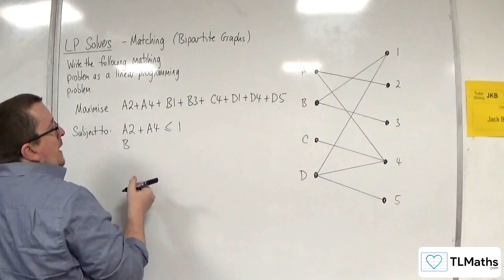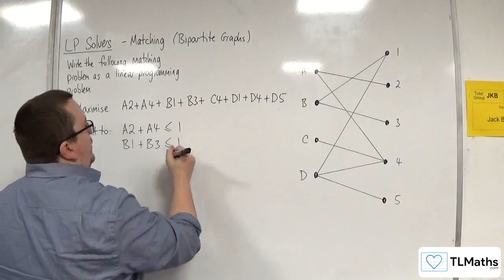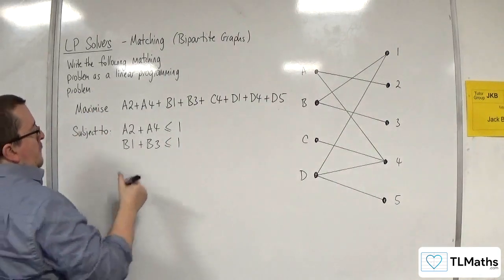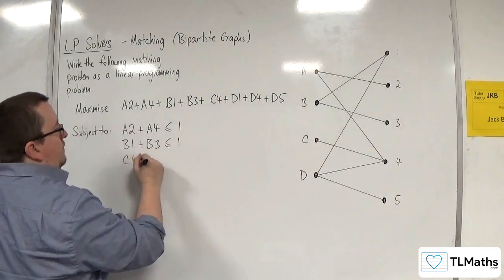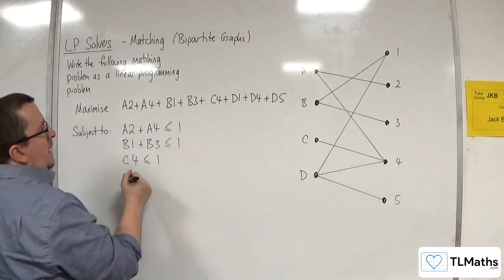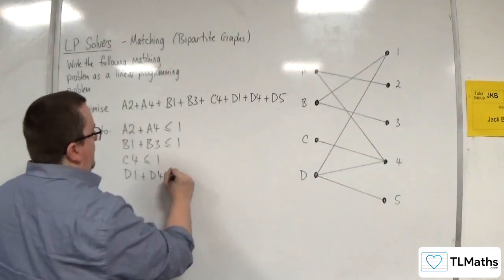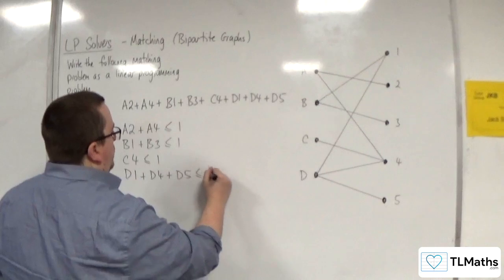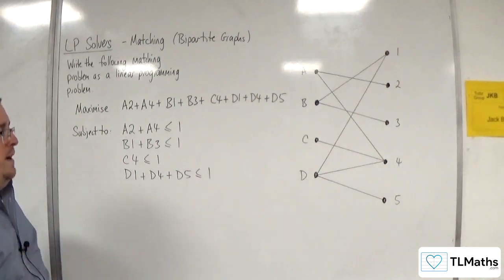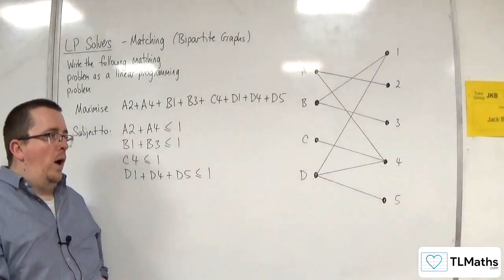For worker B, we've got B1 + B3 and that's got to be less than or equal to 1. For worker C, we've got C4 and that's got to be less than or equal to 1. And then for D, we've got D1 + D4 + D5 and that's got to be less than or equal to 1. So that restricts each of the workers to doing at most one of the jobs.